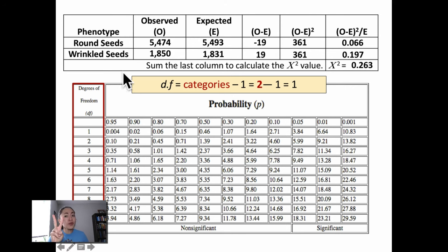Since we only have two categories in our data set, our categories are round seeds and wrinkled seeds, our degree of freedom would be 2 minus 1, which is 1. So our degree of freedom is 1, and we would only be focusing on row 1 of the table and we could ignore the rest of the table. If we were, for example, looking at four different phenotypes and had four different categories, then we would be looking at row 3 and so forth.